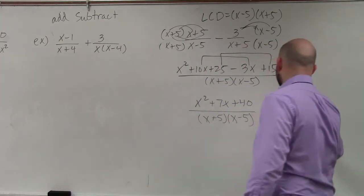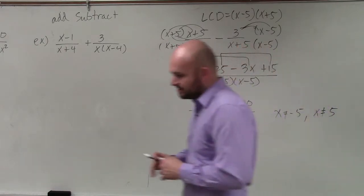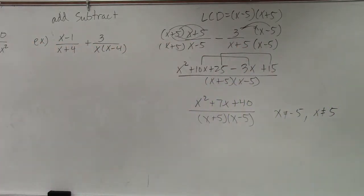And we're also going to want to write in our constraints, x cannot equal 5, and x cannot equal positive 5. And that's it.